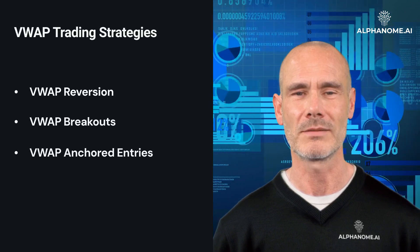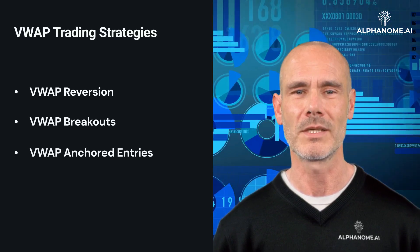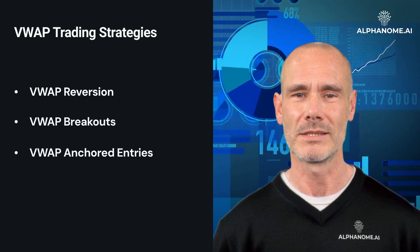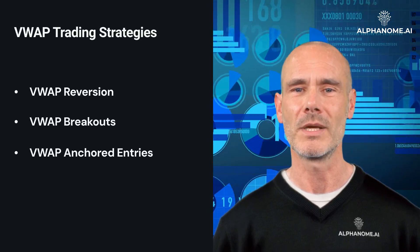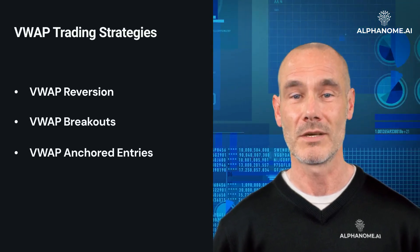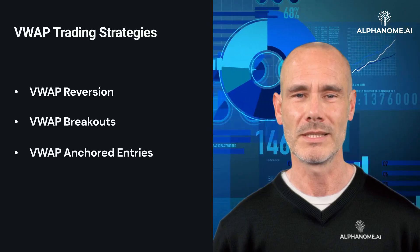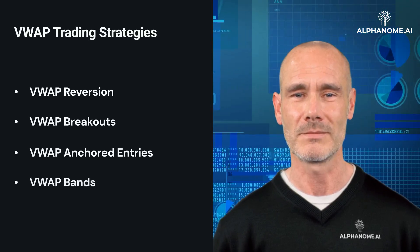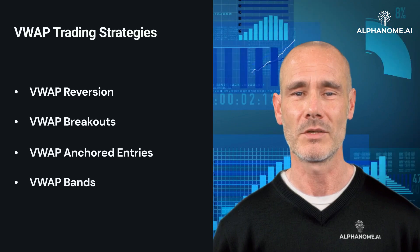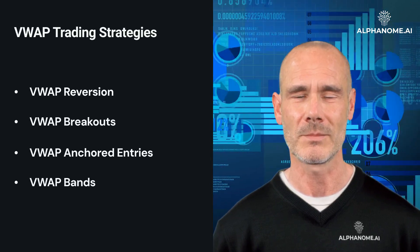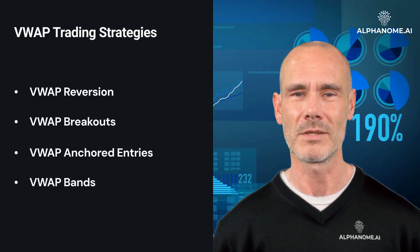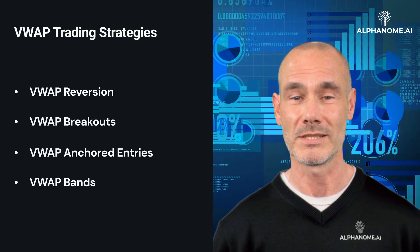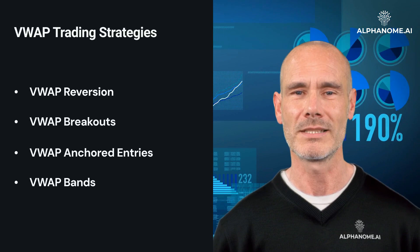VWAP Anchored Entries involve aggressive traders using the VWAP as a signal line to buy on pullbacks to the VWAP in an uptrend, or sell on bounces to the VWAP in a downtrend. VWAP Bands involve drawing bands around the VWAP — for example, 1% above or below — which can serve as dynamic support and resistance levels for trade entries and exits.